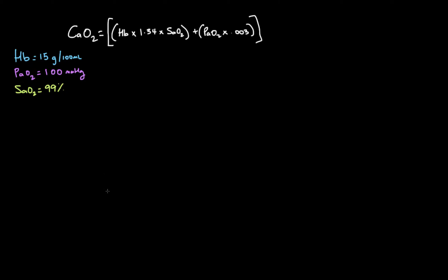Welcome back. In the last video we introduced the concept of oxygen content and worked through the formula for calculating it by looking at dissolved oxygen in the plasma and oxygen combined to hemoglobin. In this video, we're going to take some normal arterial blood gas values and calculate a normal oxygen content. You'll see that the amount of oxygen carried by hemoglobin hugely outnumbers the amount dissolved in the plasma, helping you contextualize the different ways oxygen is transported in the blood.